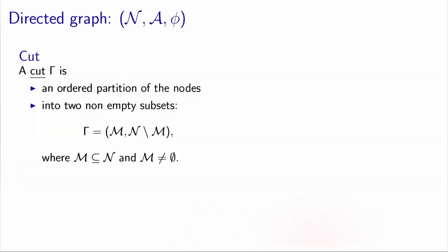So we have a directed graph with a set of nodes N, a set of arcs A, and the incidence function phi. A cut gamma is defined as an ordered partition of the nodes into two non-empty sets.